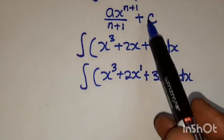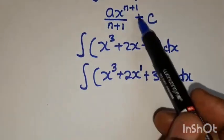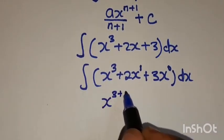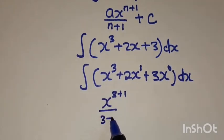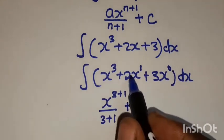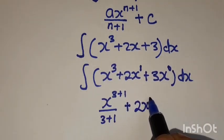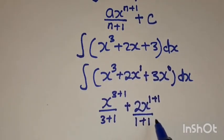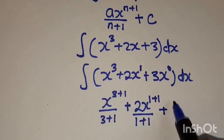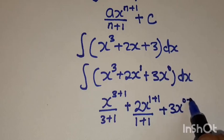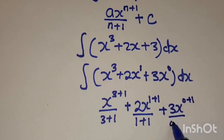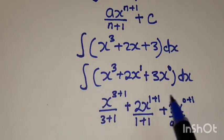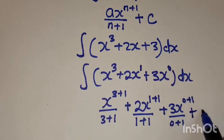Now we are going to apply what we did here. So we are going to have x to the power 3 plus 1 divided by 3 plus 1, the new power, then plus 2x to the power 1 plus 1, divided by the new power 1 plus 1, then plus 3x to the power 0 plus 1 divided by the new power 0 plus 1. And because this integral has no limits, it means it's an indefinite integral, so we add a constant c.